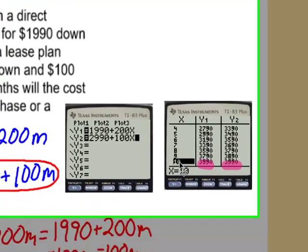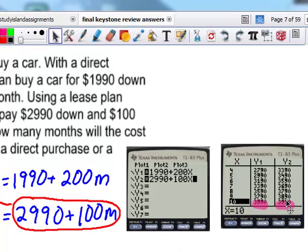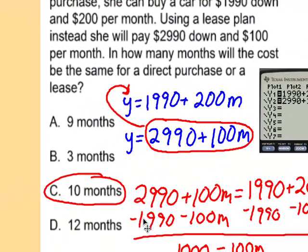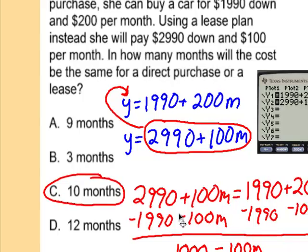Type in both and I can go to my table. I can see when X is 10 - what X is the number of months - we have the same payment, the same total outcome. So after 10 months they will be equal. Again, a little bit of reasoning, common sense. Think about the situation and you should be able to figure it out.